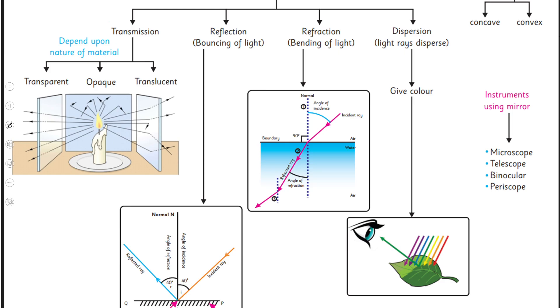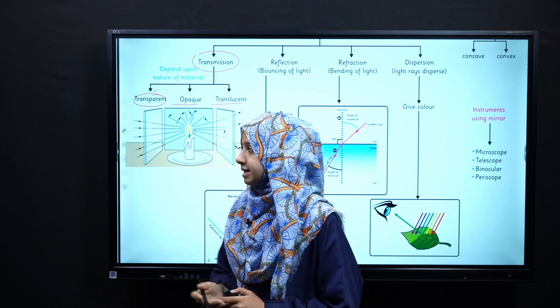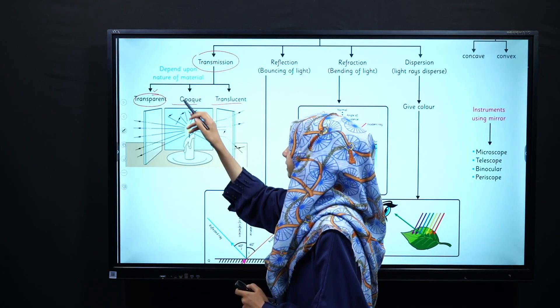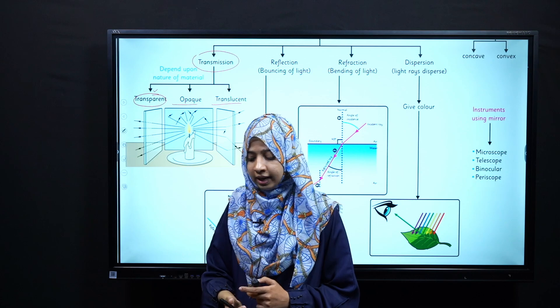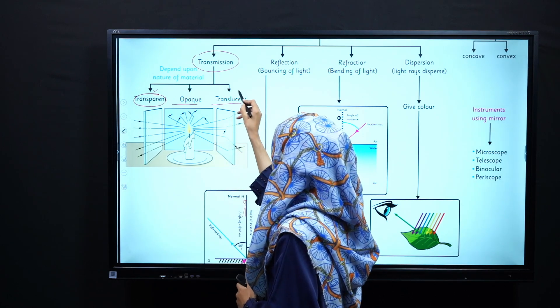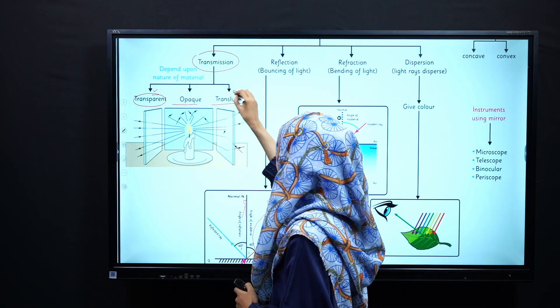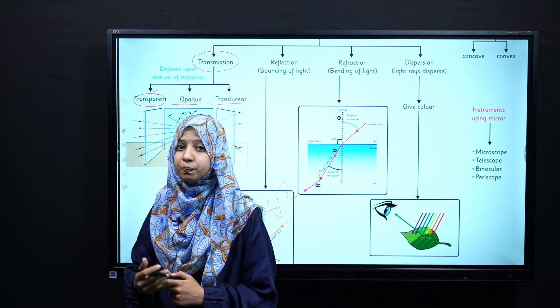Next humne is ki behaviors ko study kiya just like transmission that describes the passage of light through different mediums. Yaha humare paas three mediums hain jinko humne discuss kiya that are transparent, opaque and translucent. Transparent materials are the type of materials that allow light to pass through them whereas opaque materials do not allow light to pass through them. Jabki translucent materials humare paas aise materials hoti hain jin mein se light partially pass hoti hai aur kuch light pass nahi ho paati.